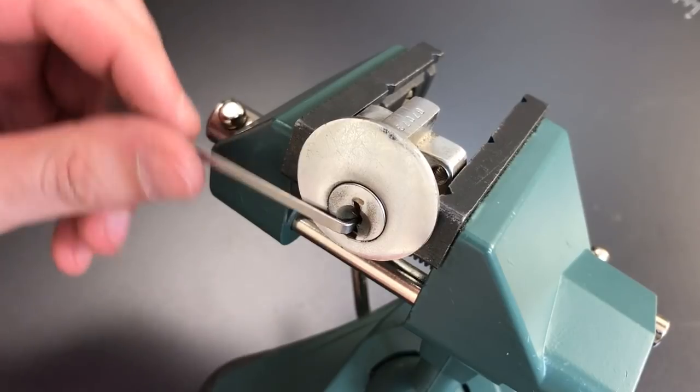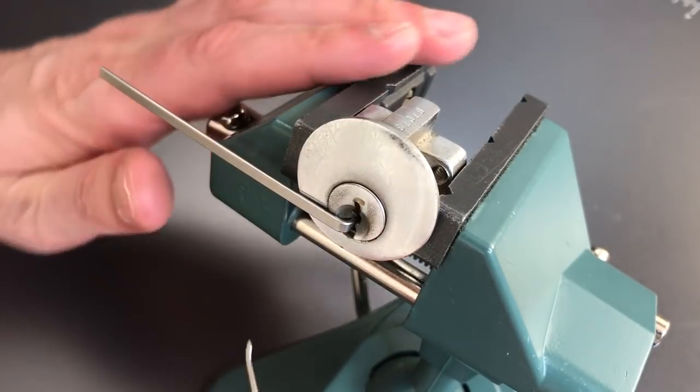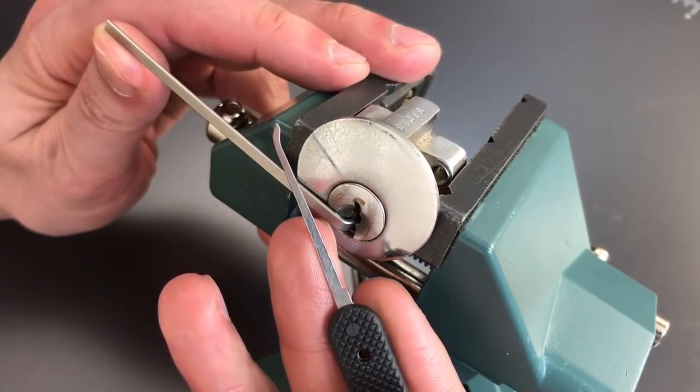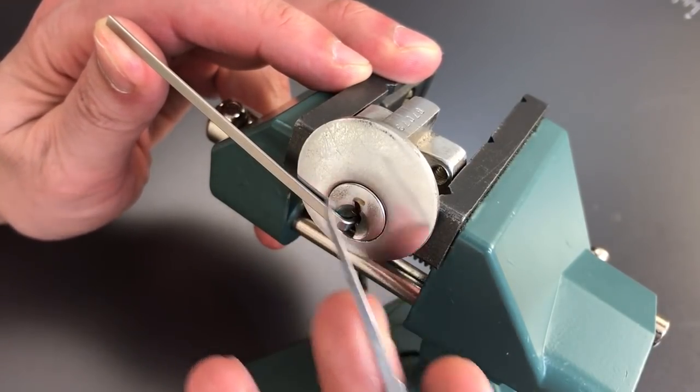And get to picking. I'm using bottom of the keyway tension with a thick and wide wiper insert, and a Peterson standard hook in 25 thousandths.